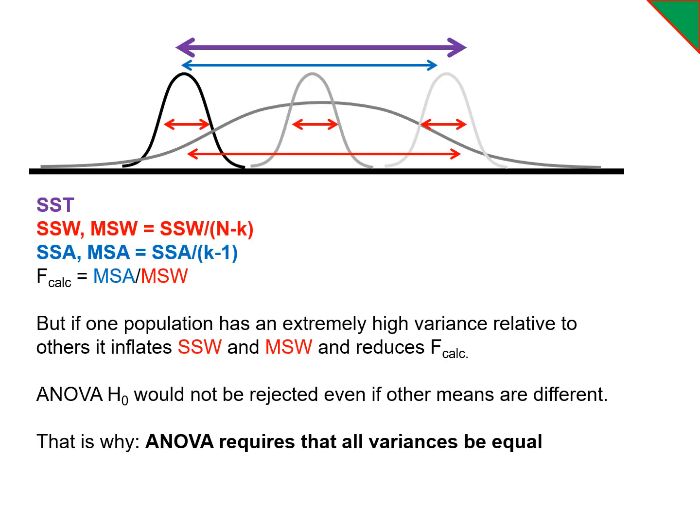But to return to this slide from earlier, we can only do the ANOVA if all the variances are equal. If we have one group, like this medium gray one here, that has this gigantic sum of squares within, it will inflate the overall mean sums within,